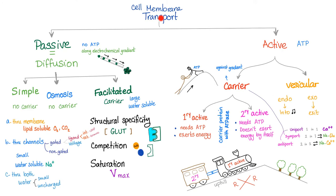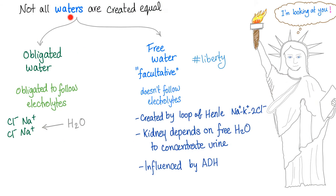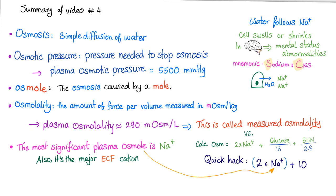Cell membrane transport is either passive or active. Osmosis is a passive diffusion — no ATP, no carrier needed. The water that follows electrolytes blindly is called obligated water. Define osmosis: simple diffusion of water.